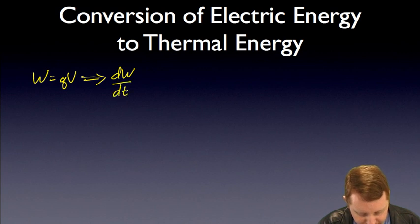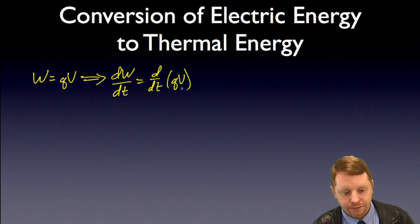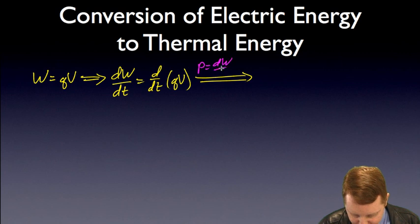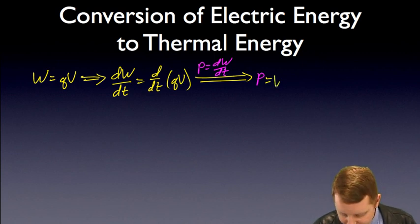So, if we take the derivative of both sides with respect to time, the rate of change of the work we do is equal to the time derivative of charge times potential. But, if you recall, power equals dW dt. So, the left-hand side becomes power, then is equal to, well, our potential should be a constant. So, that'll be V times dQ dt.